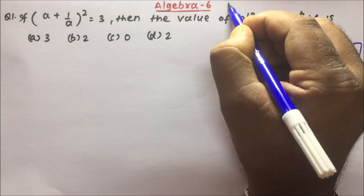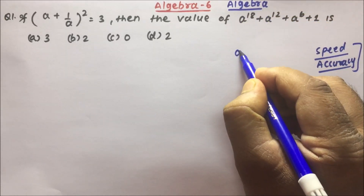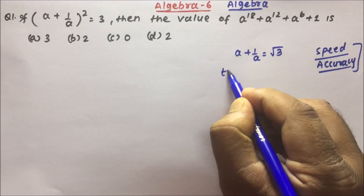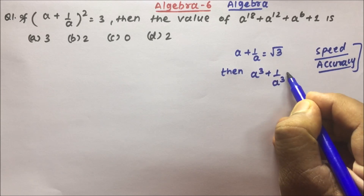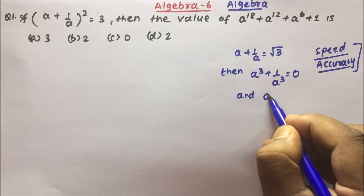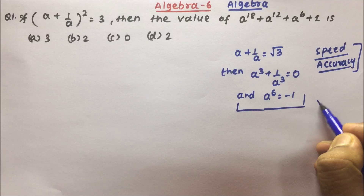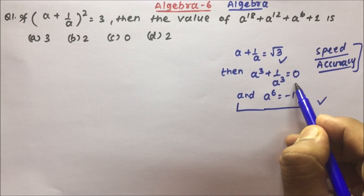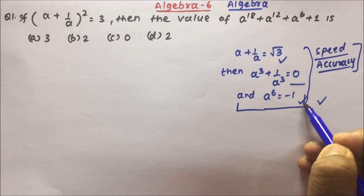In the previous video, algebra part 5, I had taught you that if a + 1/a equals √3, then a³ + 1/a³ will be equal to 0, and a to the power 6 will be equal to -1. I have proved this in part 5 as well. So if a + 1/a equals √3, then a³ + 1/a³ = 0 and a⁶ = -1. Keep this in mind.